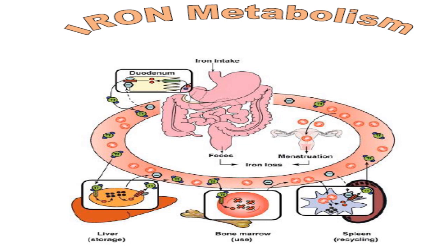We consider the red blood corpuscle as a bag full of hemoglobin dissolved in water. Hemoglobin is divided into two parts: heme and globin. Globin is a protein formed of a sequence of amino acids, while heme is formed from both protoporphyrin and iron.